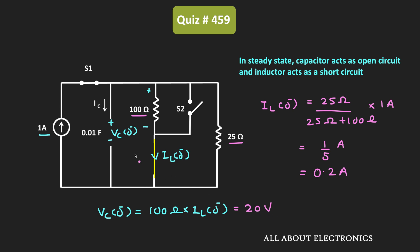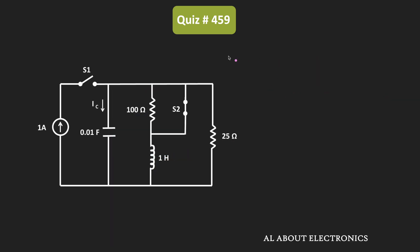So at t equals 0⁻, the inductor current IL equals 0.2 ampere, while the voltage across the capacitor equals 100 ohms times 0.2 ampere, which is 20 volts. Now at t equals 0+, S1 is opened and S2 is closed. But the capacitor opposes instantaneous change in voltage while the inductor opposes instantaneous change in current. Therefore at t equals 0+, the capacitor voltage remains 20 V and the inductor current remains 0.2 A.